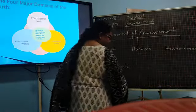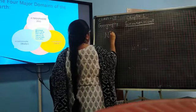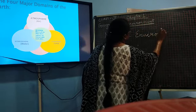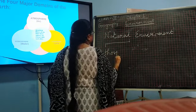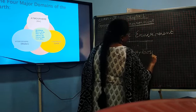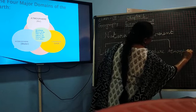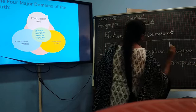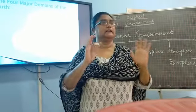Now we start the natural environment. Natural environment is divided into four parts: lithosphere, hydrosphere, atmosphere, and biosphere. Whatever nature gives us is known as natural environment. The atmosphere is air, hydrosphere is water, biosphere is where all three spheres interact, and lithosphere is land.